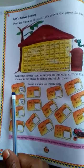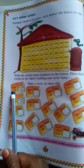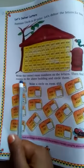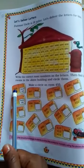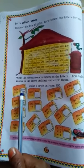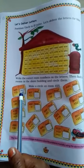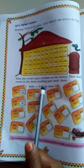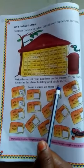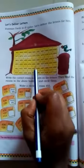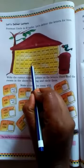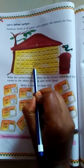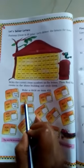445 plus 10. So let's do addition. They have already done for you. 445 plus 10 is equal to 455. Make a circle on room number 455. So let's find out. This is the room number 455.